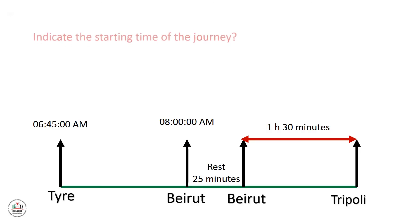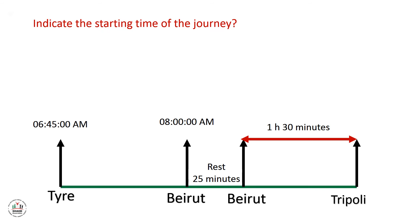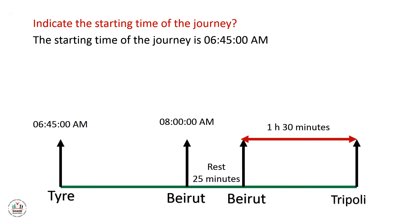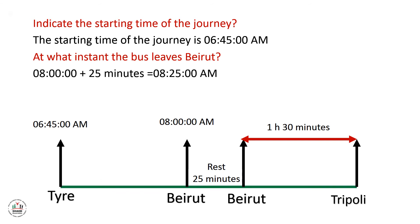The first question: what is the starting time of the journey? The first station is Tyre, and the bus leaves at 6:45 a.m. — this is the starting time. The second question: at what instant does the bus leave Beirut? The bus reaches Beirut at 8:00 a.m. and rests for 25 minutes. We add 8:00 plus 25 minutes, giving 8:25 a.m. — this is the instant the bus leaves Beirut.